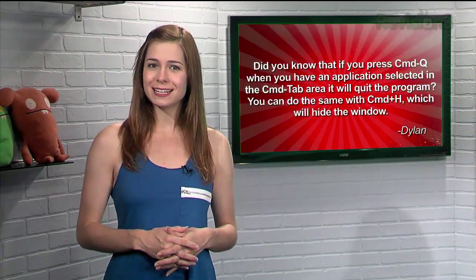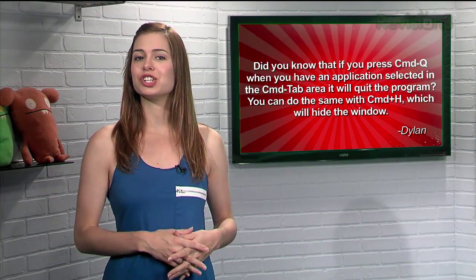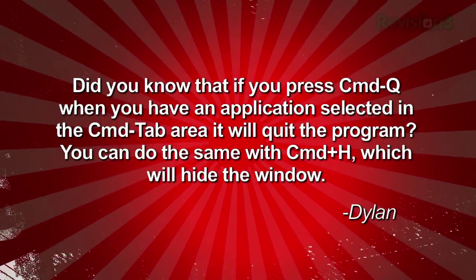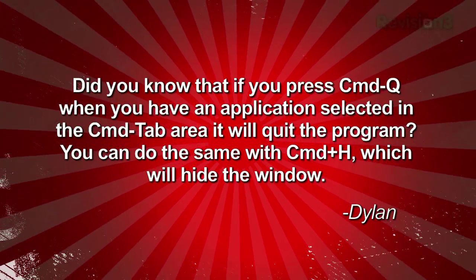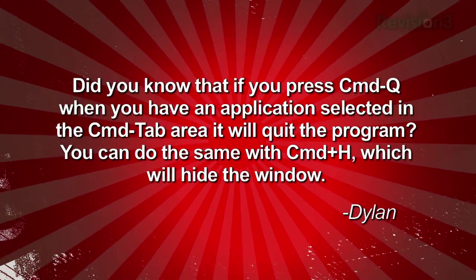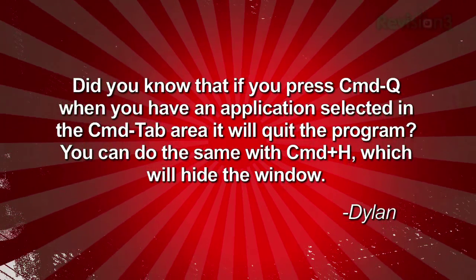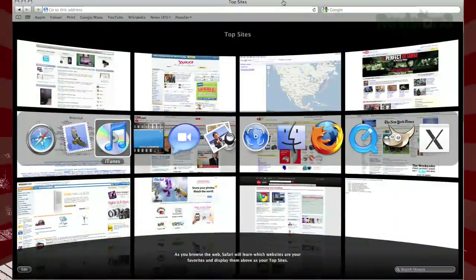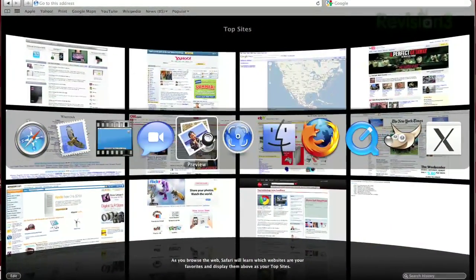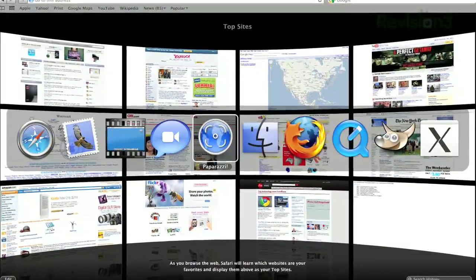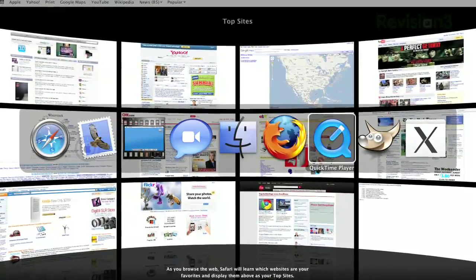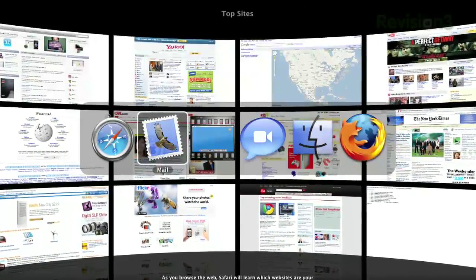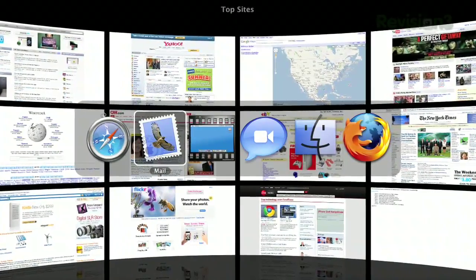TZ Daily viewer Dylan has a solution to close a stack of applications in a snap. He writes: Did you know that if you press Command+Q when you have an application selected in the Command+Tab area, it will quit the program? You can do the same with Command+H, which will hide the window. While it seems like a little thing, I find it comes in handy when I've got a bazillion apps open. Thanks Dylan — now that's using your gray matter. Say so long to tedious app closures and hello to this snappy little shortcut.